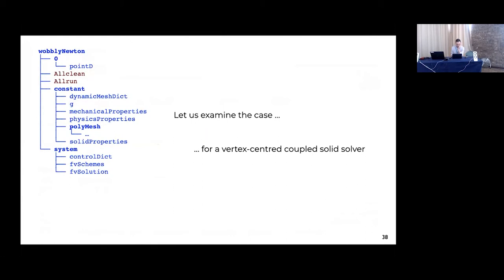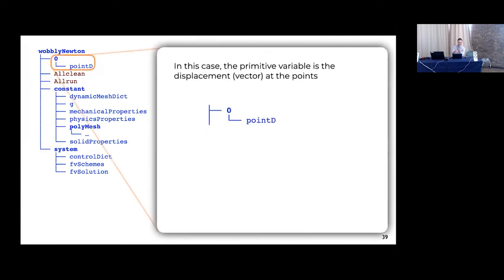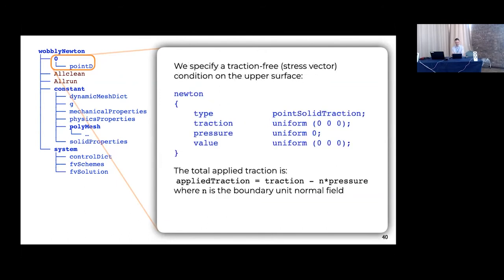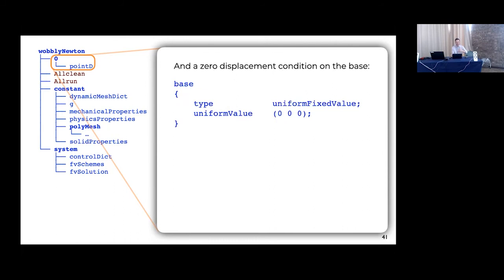Now let's look at the wobbly Newton case. You can find it under solids/linearElasticity. This case demonstrates a vertex-centered finite volume method that's implicit, solving for pointD — displacement at mesh points. In the zero folder you'll find pointD with boundary conditions: the 'newton' patch (the rest of the surface exposed to air) has a zero traction condition using pointSolidTraction, and the 'base' patch has pointD fixed to zero displacement so it doesn't move.